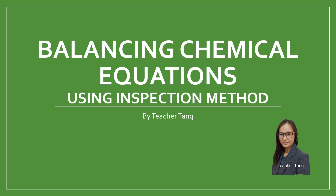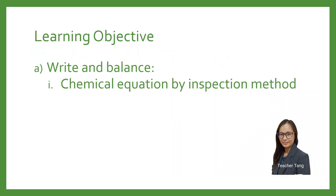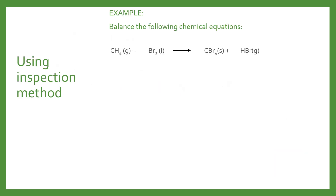In this video, we are going to look at how to balance a chemical equation using the inspection method. I will cover the learning objective on how to write and balance a chemical equation by inspection method. Inspection method is the method that we usually use to balance a chemical equation. We usually start with the species that has the most complicated chemical formula.